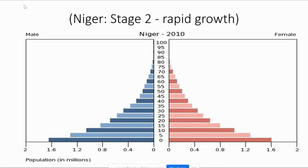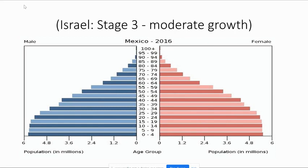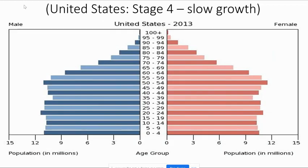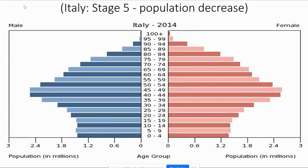Looking at population pyramids: cohorts that keep extending outward indicate rapid growth. Israel is an example of moderate growth — still growing but not as extreme. The United States, as a stage four country, shows a much narrower base compared to stage three countries. Italy, a stage five, has a large proportion of people above age 40.